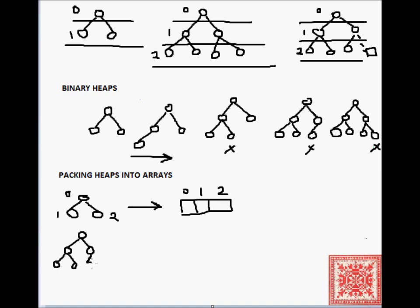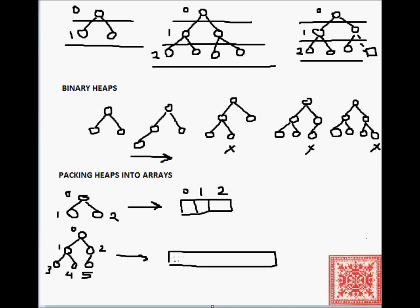Let's consider another example. We have node number zero, node number one, node number two, node number three, node number four, node number five, and we're going to pack it into an array going level by level. So: zero, then one, two, and then three, four, five.